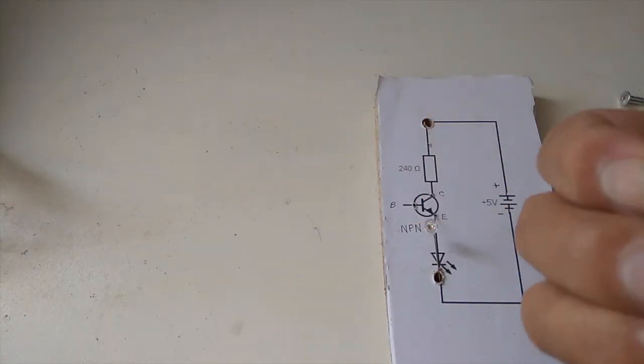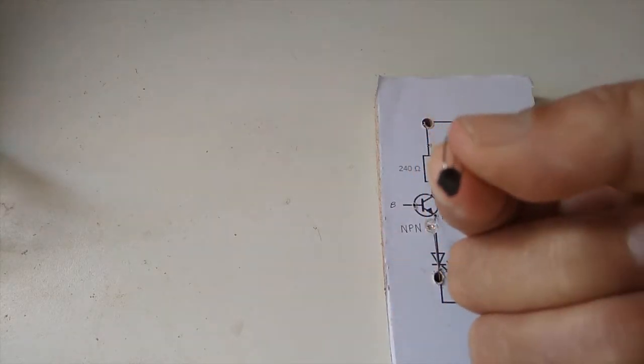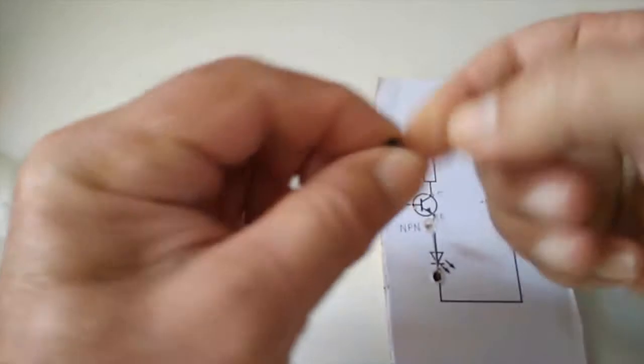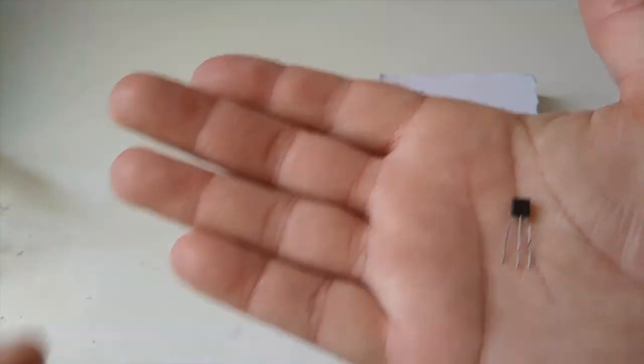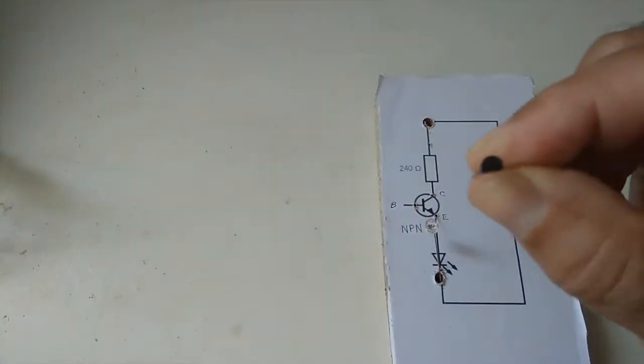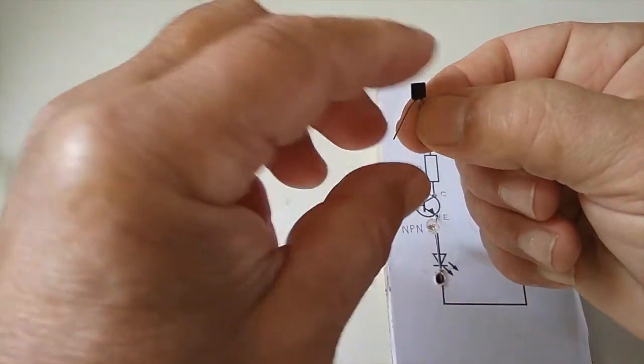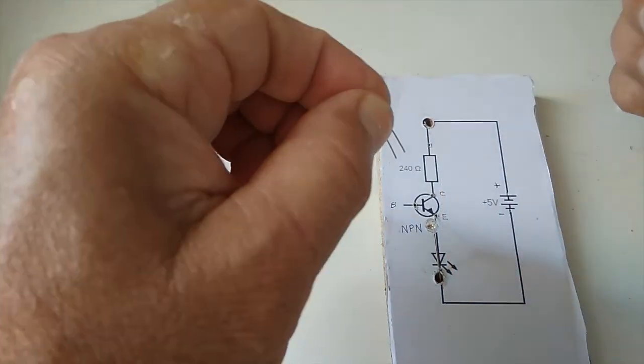Then here is a thing you haven't seen before. It is a transistor. Now it's got three little legs and it's got a curve to it. So this is the collector, the middle one is the base, and the third one is the emitter.